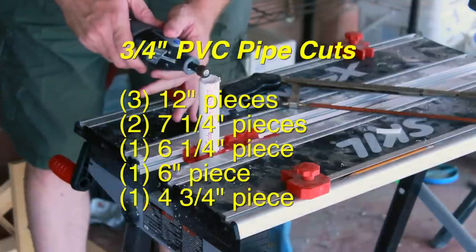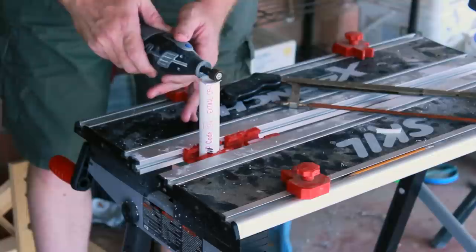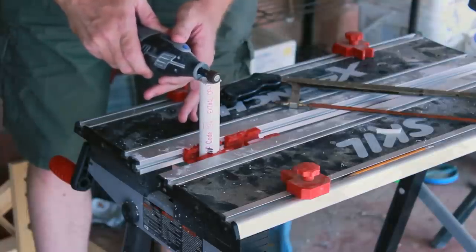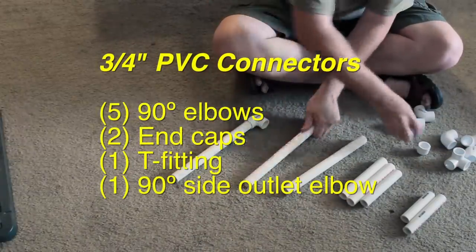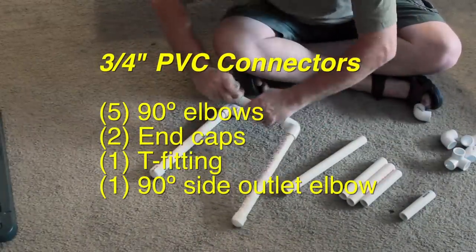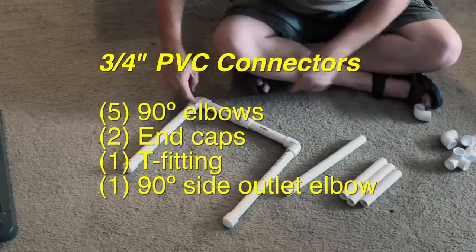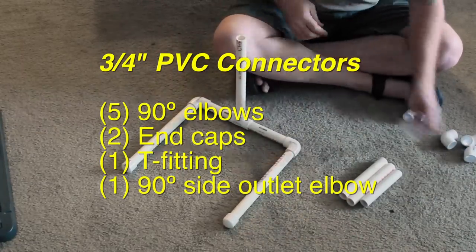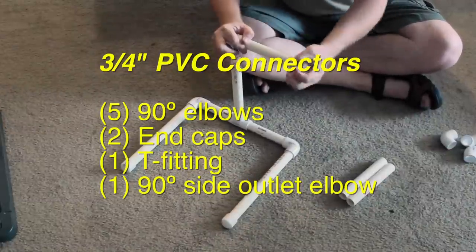While not entirely necessary for many of the pieces, I like to sand them off anyway, just to get a nice smooth finish on them. I'm going to test fit the pieces here. You're also going to need some additional parts. You're going to need 5 ninety degree elbows, 2 end caps, 1 T fitting, and 1 ninety degree side outlet elbow. That's a 3 corner piece. These are also, of course, 3/4 inch PVC connectors.